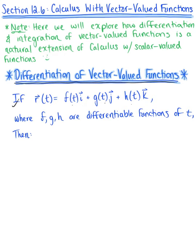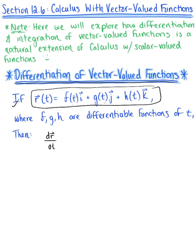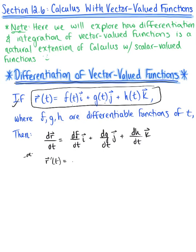Differentiating both sides of this vector-valued function with respect to our arbitrary parameter t, the derivative of vector r with respect to t is equal to the derivative of f with respect to t î, plus the derivative of g with respect to t ĵ, plus the derivative of h with respect to t k̂. Or using alternative notation, vector r prime of t equals f prime of t î plus g prime of t ĵ plus h prime of t k̂, or we could use vector component form.